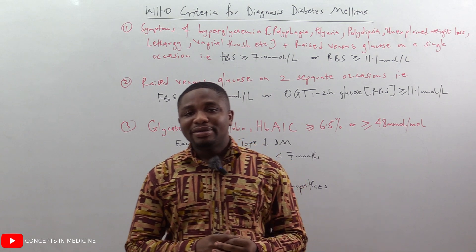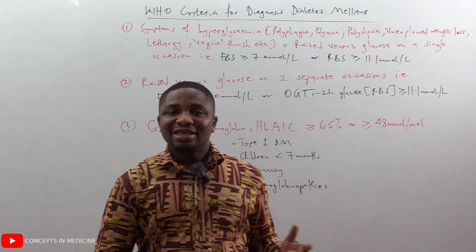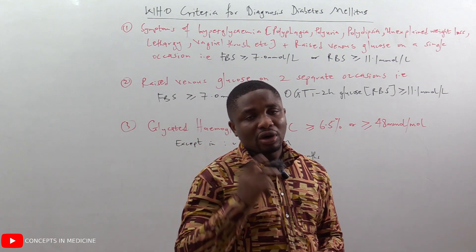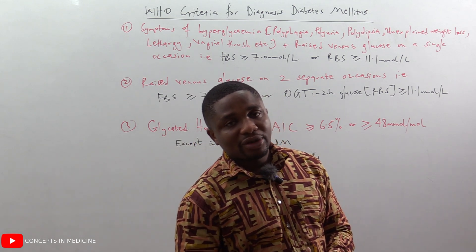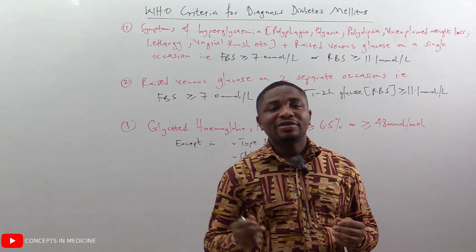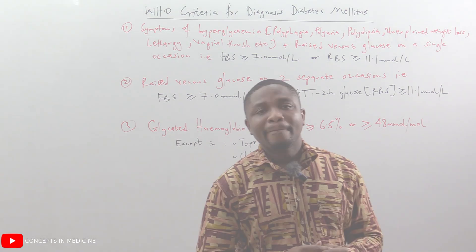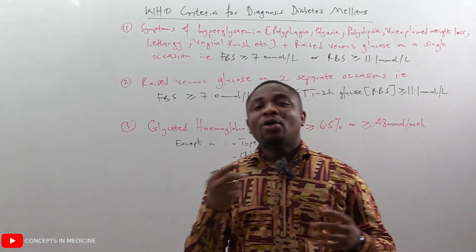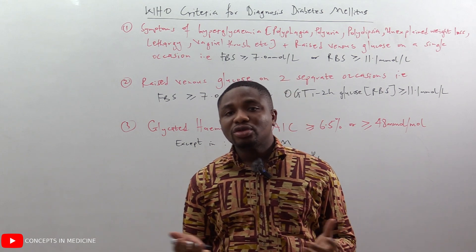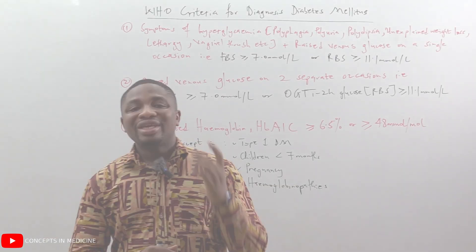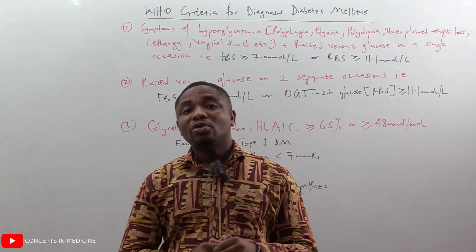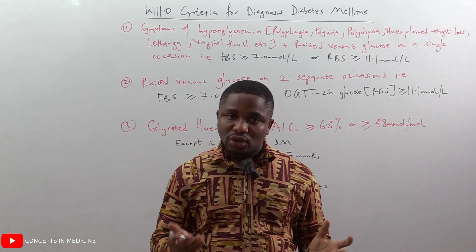The second criteria is raised venous glucose on two separate occasions — that is the fasting blood sugar greater than or equal to 7.0 millimoles per liter, or the oral glucose tolerance test two-hour glucose, which is synonymous to the random blood sugar greater than or equal to 11.1 millimoles per liter. If so, you can conveniently diagnose diabetes mellitus.